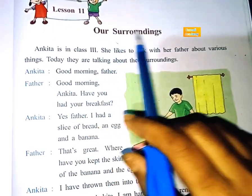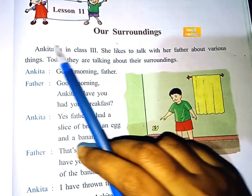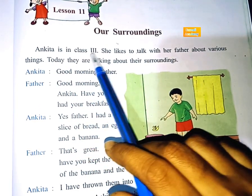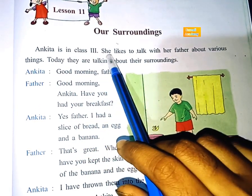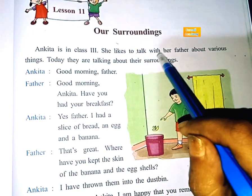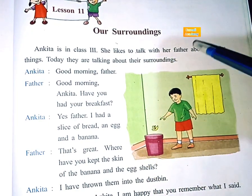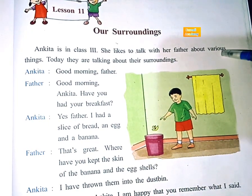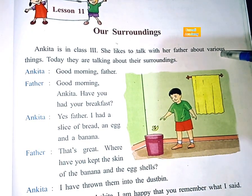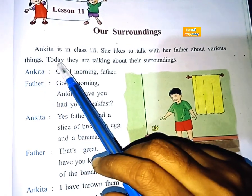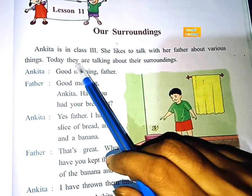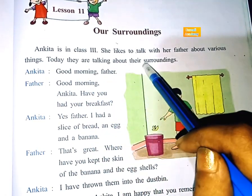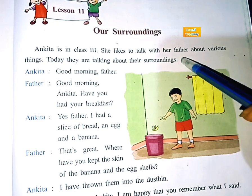Our Surroundings. Ankeeta is in Class 3. She likes to talk with her father about various things. Today they are talking about their surroundings.